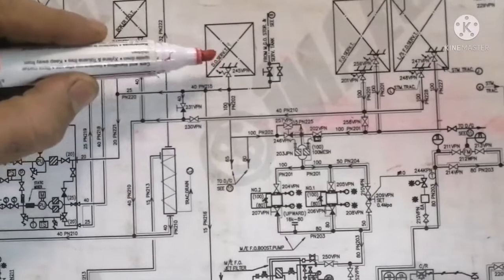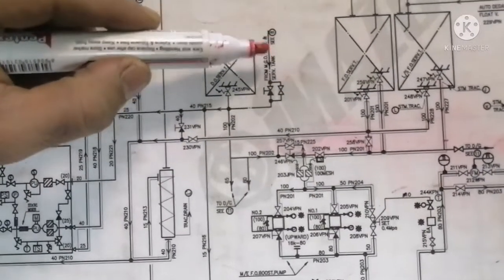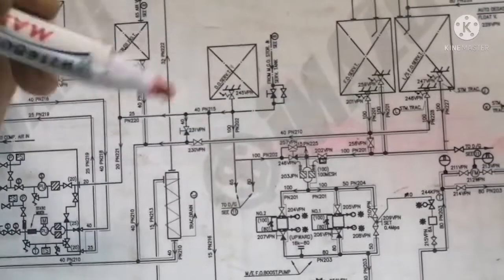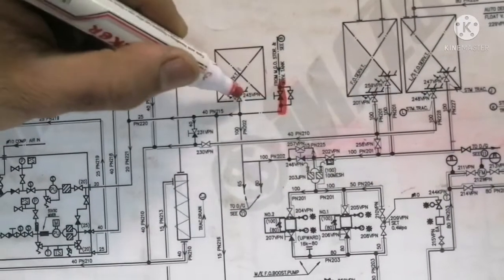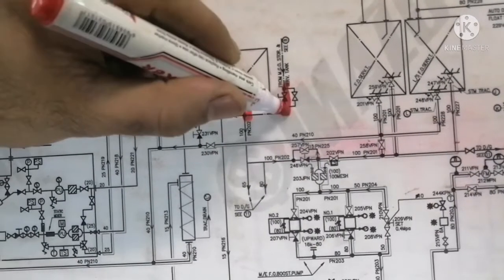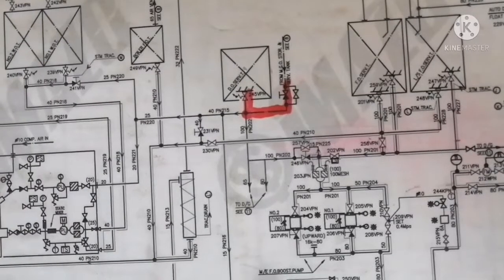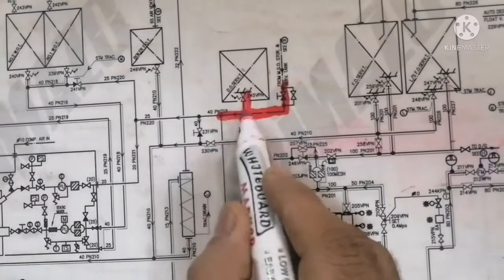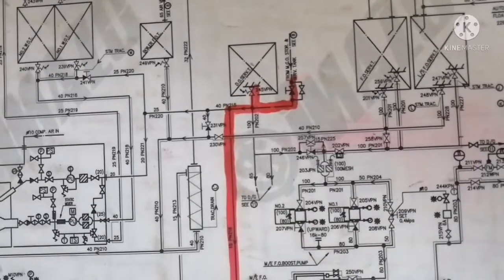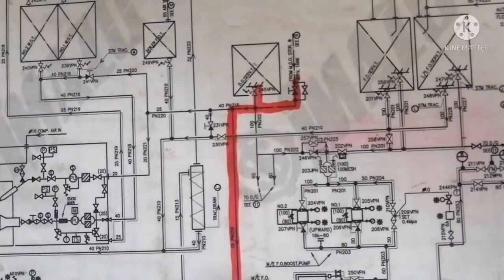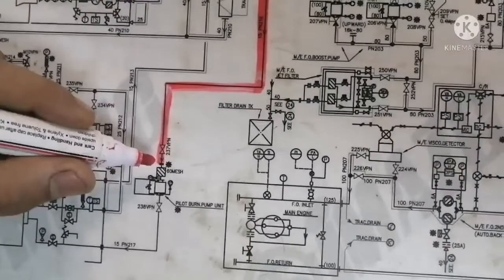This is your diesel oil service tank and this is your MGO storage tank. The line comes from the outlet here — these two are connected. Once they are connected, it goes all the way down, and you can see a filter over here — this is your 60-micron mesh filter.